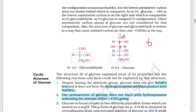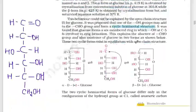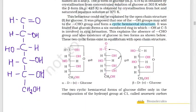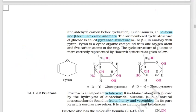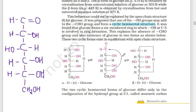The first carbon is the aldehyde group. This aldehyde group and the fifth carbon form a bond — we're talking about an oxide linkage. That's why glucose exists in a cyclic, hemiacetal structure.